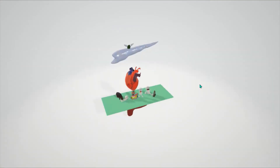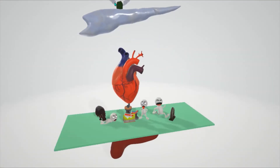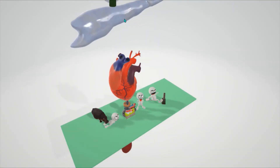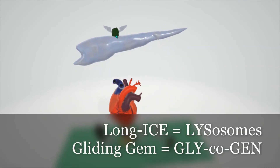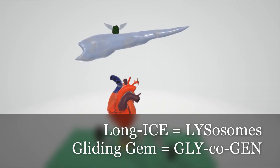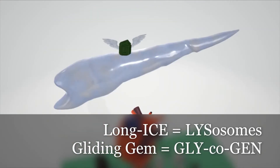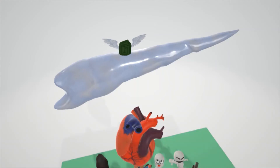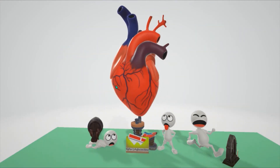This deficiency of acid maltase leads to an increase of glycogen in the lysosomes. To remember that, the person who trashed the factory has a long piece of ice floating in the air — 'ice' for lysosomes. On top of the ice, there's a gliding gem, which represents glycogen, as glycogen is increased in the lysosomes in Pompe disease.